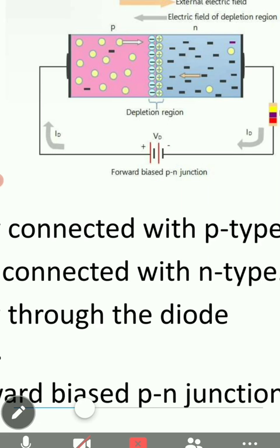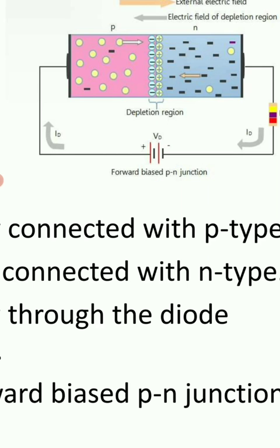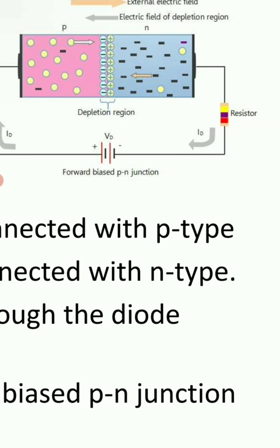When we are giving the positive terminal to the P-type, in P-type we are having holes. We are connecting the positive terminal with this. The positive terminal of the battery will repel the holes of the P-type semiconductor and that will push electrons towards the depletion region. Similarly, the negative terminal of a battery will repel the negative charge electrons of the N-type semiconductor and they will be pushed towards the depletion region.